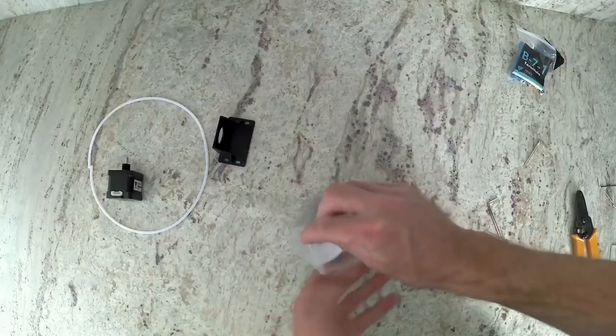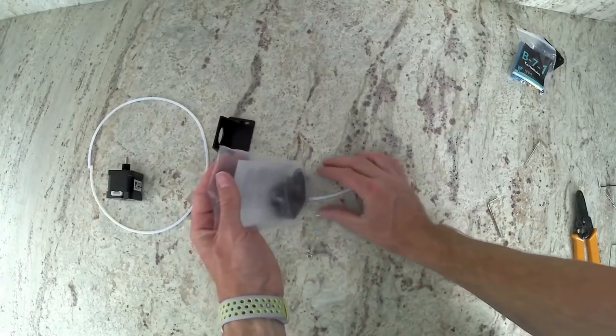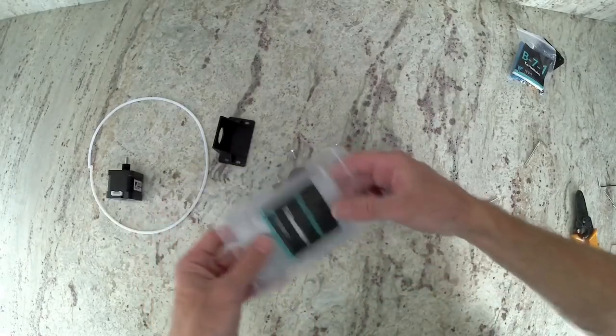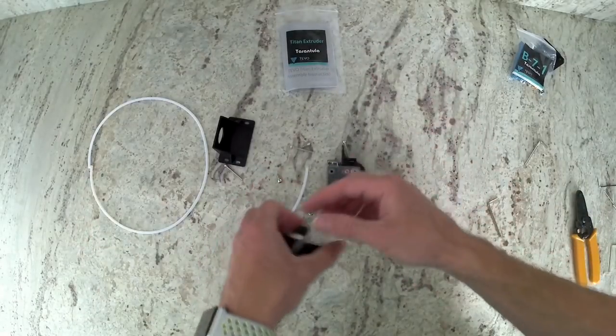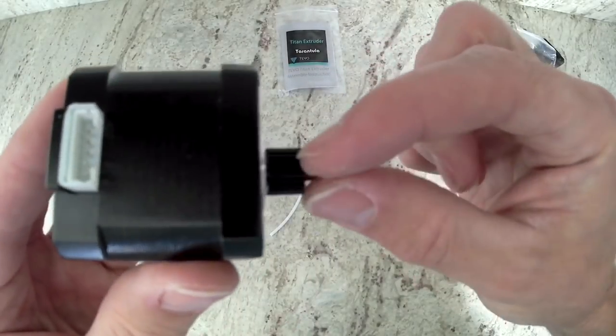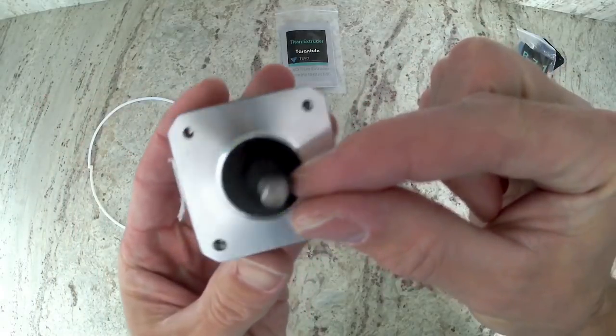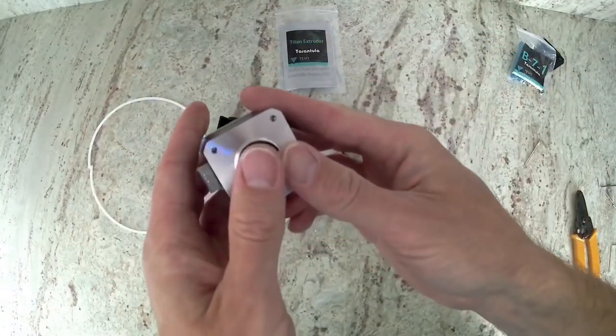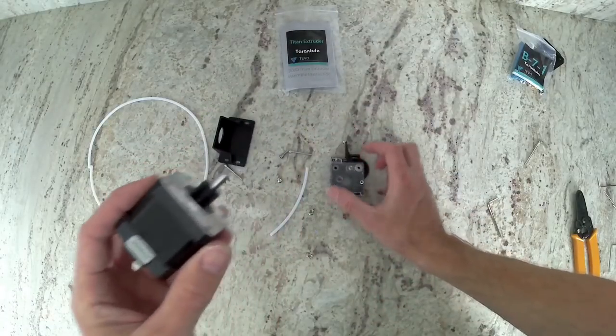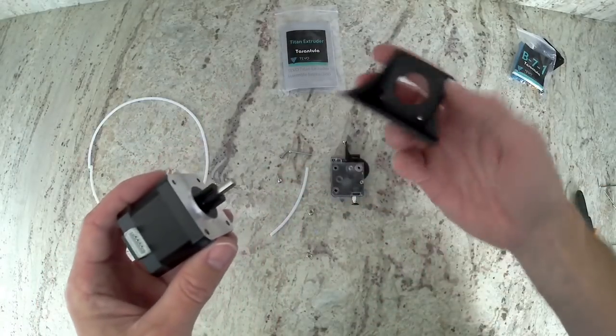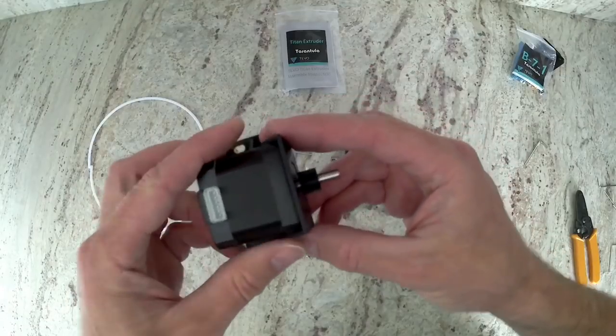We are going to start with the Titan. In the Titan Extruder bag, you're going to find this little tiny gear that you will press onto your motor shaft. The motor shaft is a D shaft, and so it is also keyed on the gear as well, so you're going to want to make sure to align those up before you press it on.